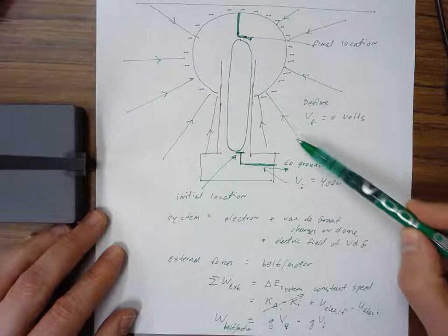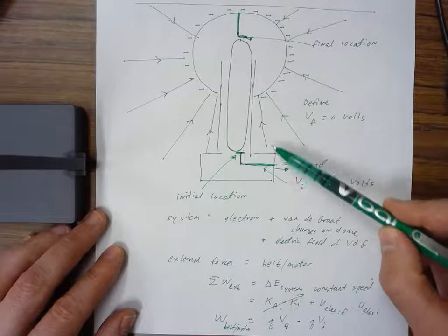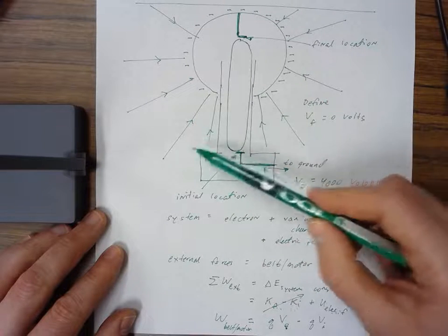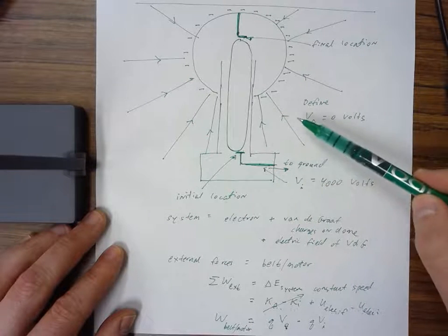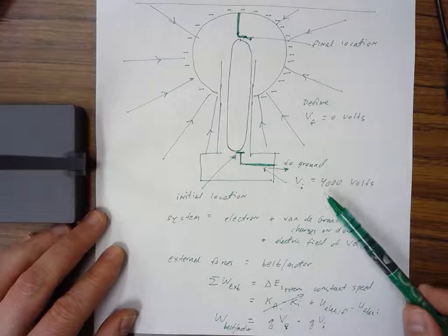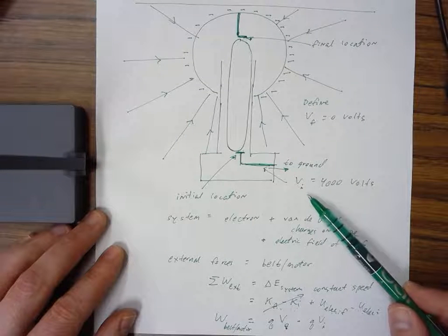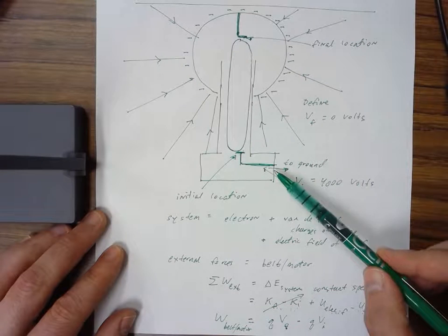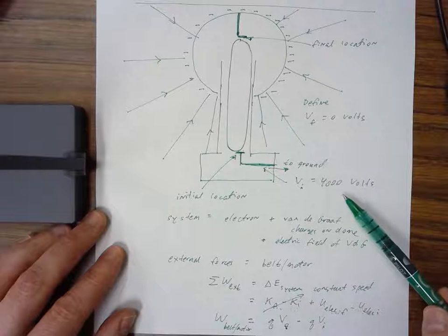With that definition, anywhere higher up—farther backward on any of these electric field lines—will be at a higher voltage. In this problem, relative to the dome, the ground is at a voltage of 4000 volts.